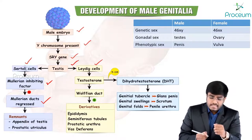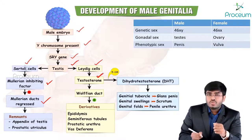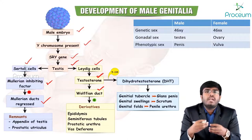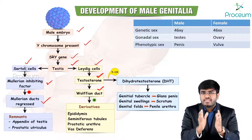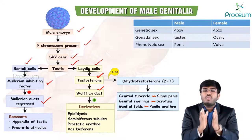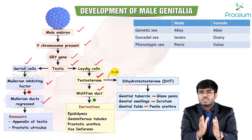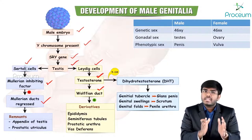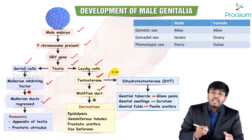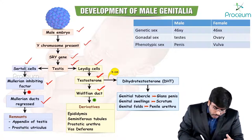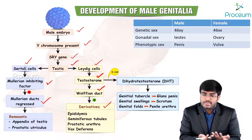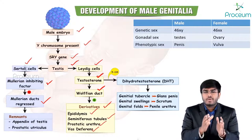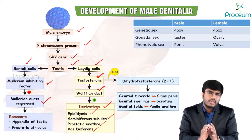Leydig cells produce testosterone. This testosterone acts on the Wolffian duct — the male duct. For expression of the Wolffian duct, functional testosterone is essential. Only if there is testosterone will the Wolffian duct be expressed; if there is no testosterone, the Wolffian duct will also undergo regression. In a male fetus, testosterone is produced, so Wolffian ducts express and develop male internal reproductive organs: epididymis, seminiferous tubules, prostatic urethra, and vas deferens.